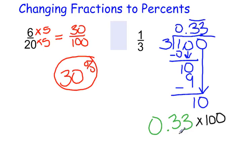Now, when we multiply by 100, our shortcut is to move the decimal two places to the right. So 33 percent is our answer.